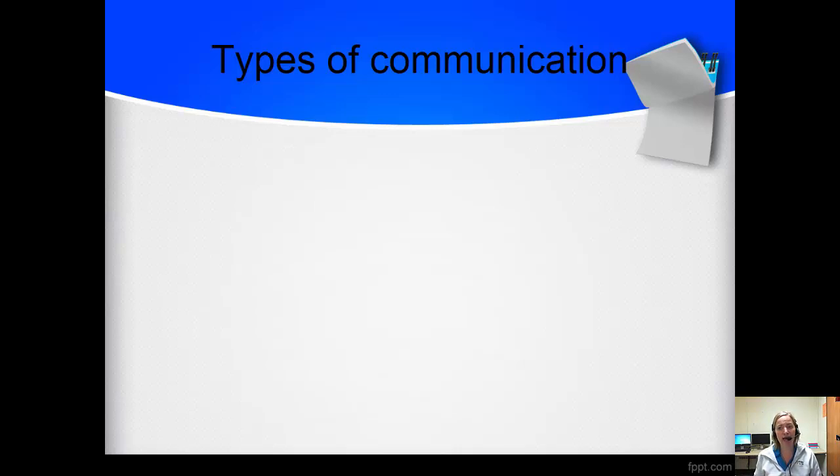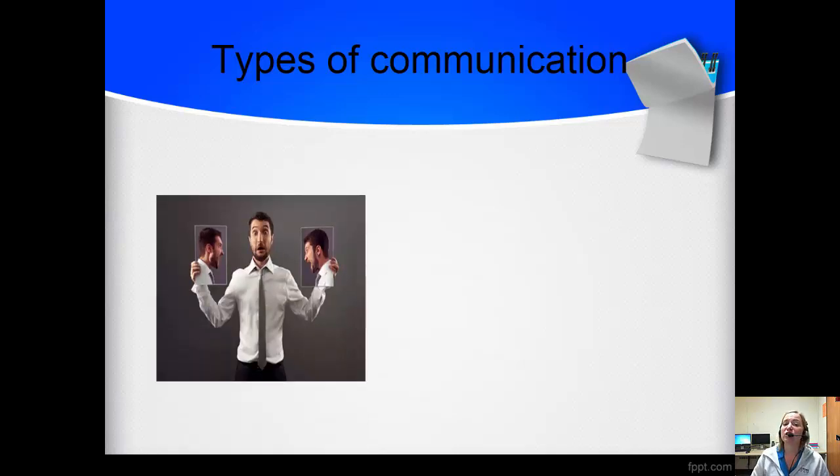So starting with types, we have the first type of communication, which is intrapersonal communication. This starts within the self. So right now I have what we call mental noise, little mental dialogue. Sometimes I get caught talking to myself as it relates to things I'm working out mentally. That's what we call intrapersonal communication.